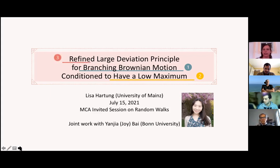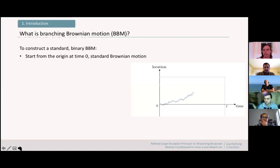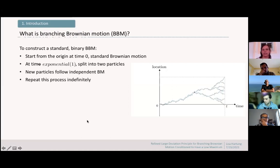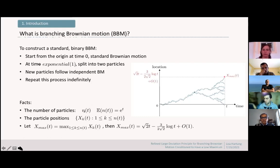For branching Brownian motion, we look at the standard binary branching Brownian motion. We start with a standard Brownian motion at time zero from the origin, let it run for an exponential(1) time until it splits into two particles. The new particles follow independent Brownian motions and branch again according to the same law. At time t, we see a random number N(t) of particles, and the expected number of particles is exactly e^t. We denote particle positions by X_k(t) and the maximal position by X_max(t).